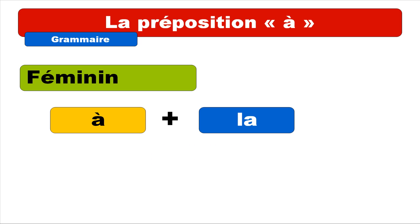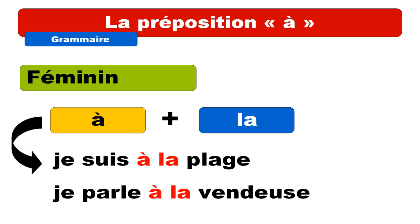So if you want to use la préposition A with the feminine form — so articles définis, remember there are le, la, les. So in this case it's the feminine form, so it's LA. It's actually quite simple because it won't change. So you will get sentences like: je suis à la plage, je parle à la vendeuse.